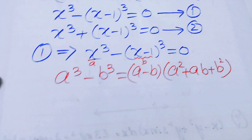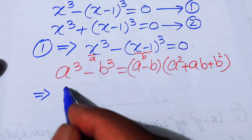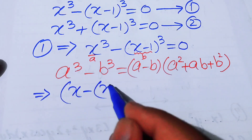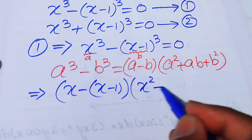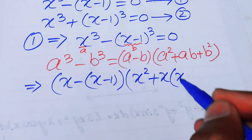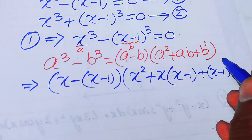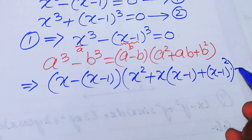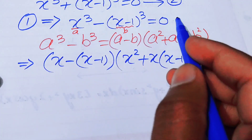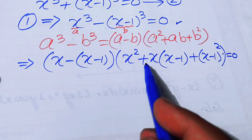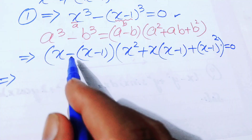Putting a = x and b = x−1 into the formula, we get: [x minus (x−1)] times [x² plus x(x−1) plus (x−1)²] equals 0. Now we apply this cubic formula and simplify the terms.